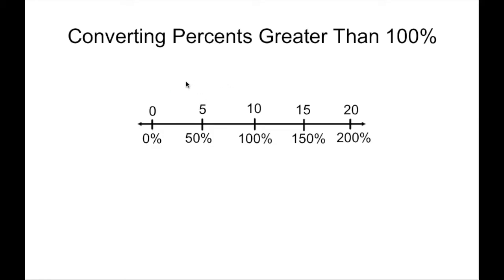If we say we had a room that would hold 10 people, if we put 10 people in that room, that's going to be 100% full. But if we have 15 people, that's more than full, so that's going to be 150% compared to the 100% of 10. Just like 5 would only be 50% of the coverage of the room. So if we have twice as many people as a room can hold — 20 people — that would give us 200%.